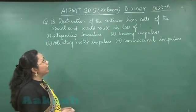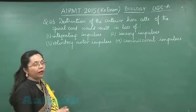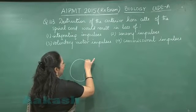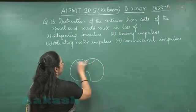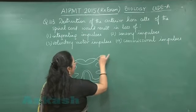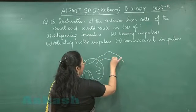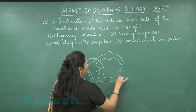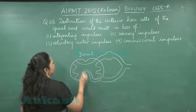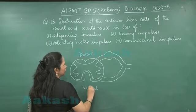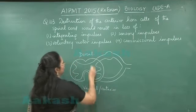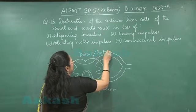In this question, destruction of the anterior horn cells of the spinal cord is discussed. If we take the spinal cord in section, we will find it appears in this manner. This is the dorsal side and this is the ventral side — ventral or the anterior, dorsal or the posterior.